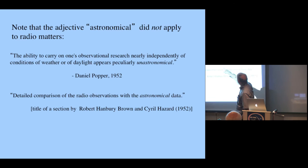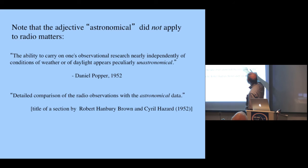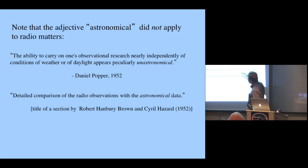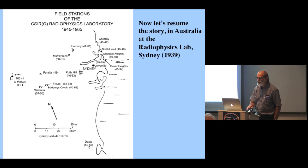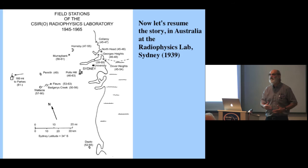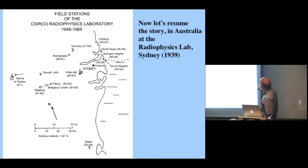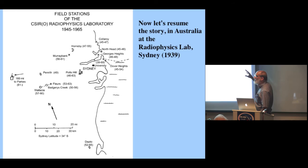One optical astronomer wrote that the ability to carry on research nearly independently of conditions of weather or daylight appears 'peculiarly unastronomical.' But radio astronomers likewise used 'astronomical' in that way—Hanbury Brown and Hazard wrote about 'detailed comparison of the radio observations with the astronomical data,' meaning optical data. Radio astronomers were always trying to legitimize themselves through comparison with the optical.